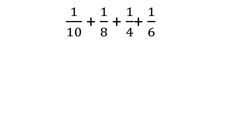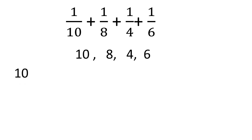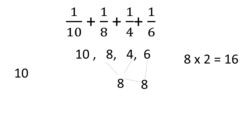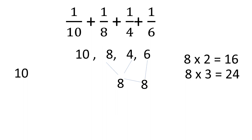Find the LCM of 1/10, 1/8, 1/4, 1/6. We use a combination approach. First, take 8 and 4: the highest is 8, and 8 is divisible by 4, so LCM = 8. Next, take 8 and 6: 8 is not divisible by 6. Try 8 × 2 = 16 — not divisible by 6. Try 8 × 3 = 24 — divisible by 6. So LCM of 8 and 6 is 24. The remaining number is 10, so 24 × 10 = 240. The LCM is 240.